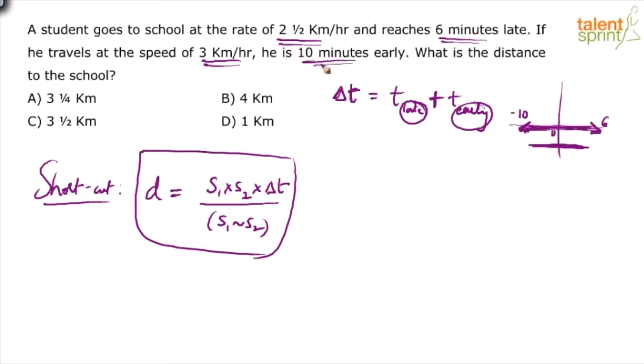And 10 minutes early. Suppose the right time to reach school is 9 AM. When he is 6 minutes late, he reaches at 9:06 AM. When he is 10 minutes early, he reaches at 8:50 AM. Now we find the difference between these two times. How much is the difference from 8:50 AM to 9:06 AM? 16 minutes. Or simply add 6 minutes plus 10 minutes equals 16 minutes. So Δt equals 16.